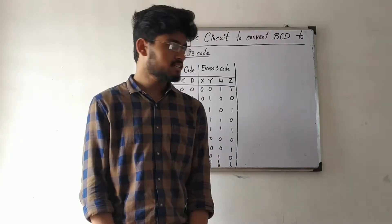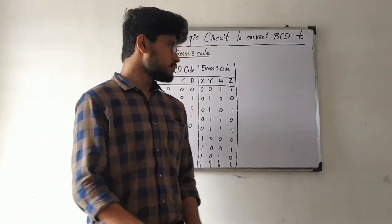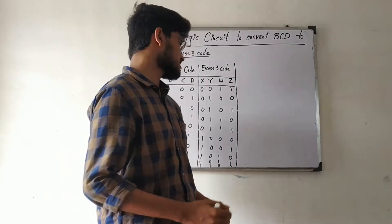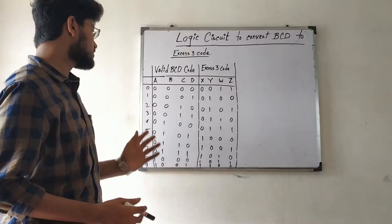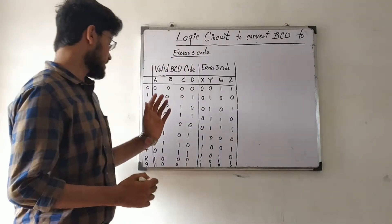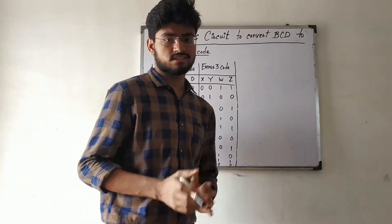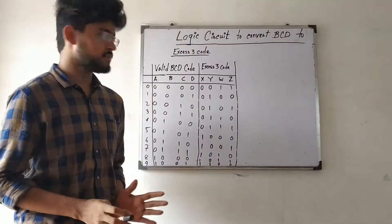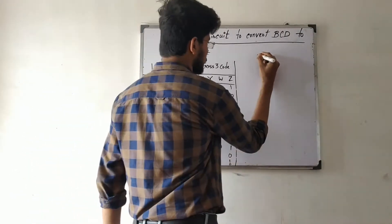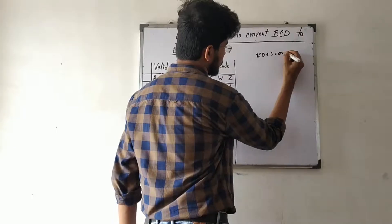In the previous lecture, we saw a logic circuit to convert binary to BCD. In today's lecture, we will see another logic circuit that converts BCD into the Excess-3 code. We have already seen that only 0 to 9 are valid BCD codes, and the rest (10 to 16 in decimal) are not valid BCD. Excess-3 code means BCD plus 3.